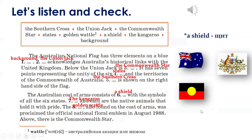I believe that your answers are correct. Point one: blue background. Two: the Union Jack. Three: the Commonwealth Star. Four: states. Five: the Southern Cross. Six: a shield. Seven: the kangaroo. Eight: golden wattle.